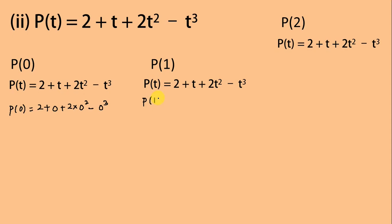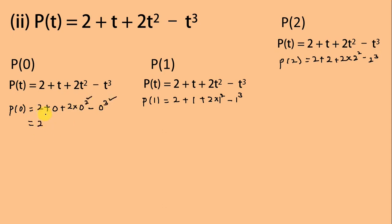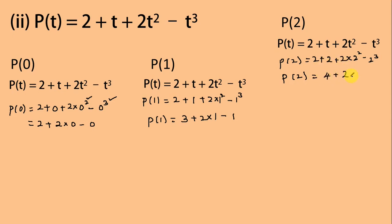For p(1): we replace t with 1, giving 1 + 1 + 2 into 1² - 1³. For p(2): we replace t with 2, giving 2 + 2 + 2 into 2² - 2³. First we find the squares and cubes. For p(0): 2 + 0 + 2×0² - 0³ = 2 + 0 + 0 - 0 = 2. For p(1): 2 + 1 is 3, plus 2×1 = 2, minus 1³ = 1.